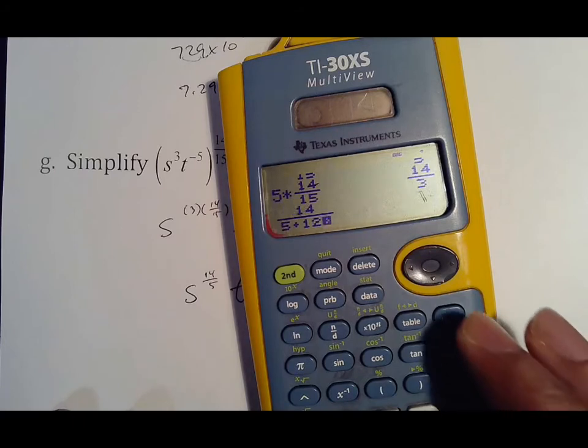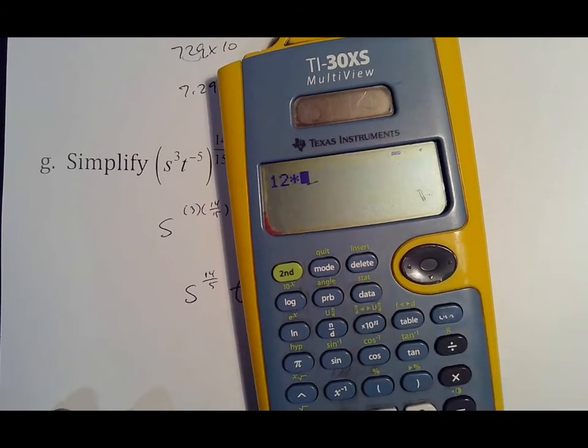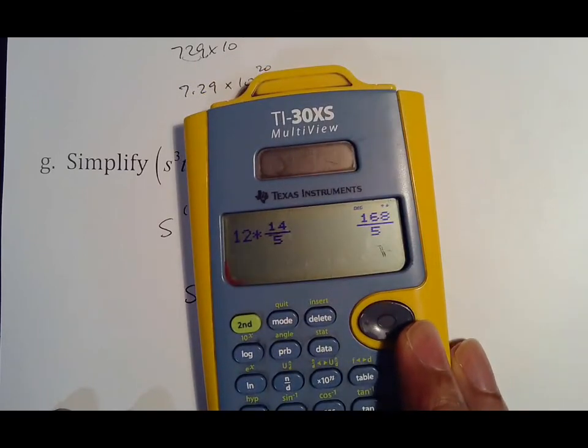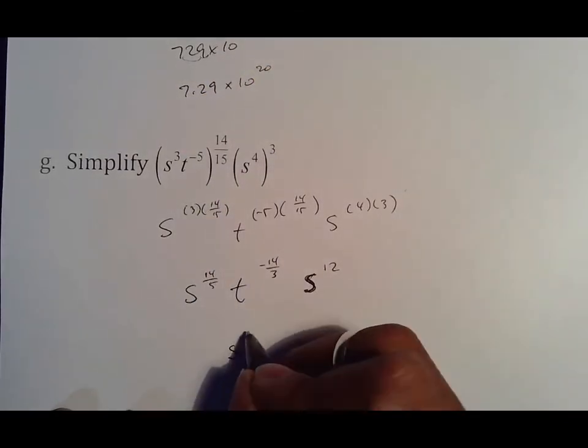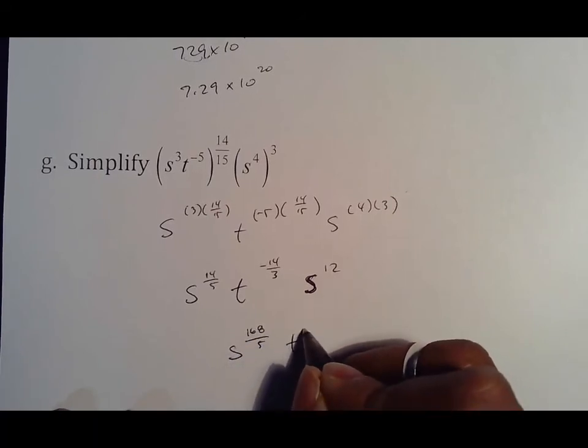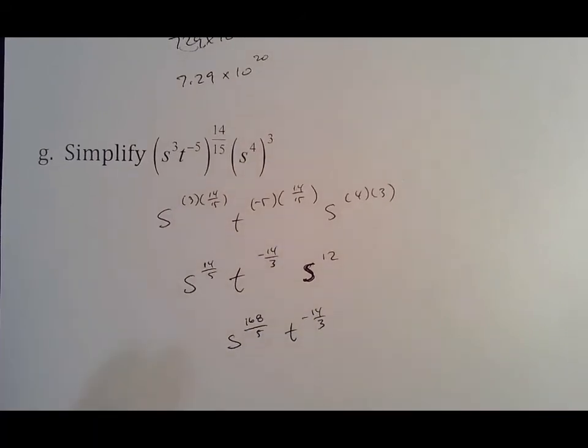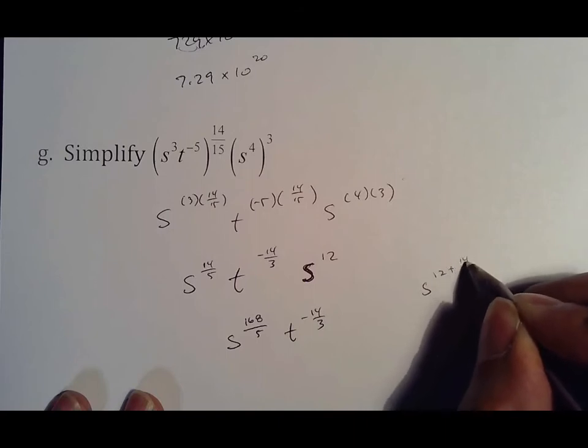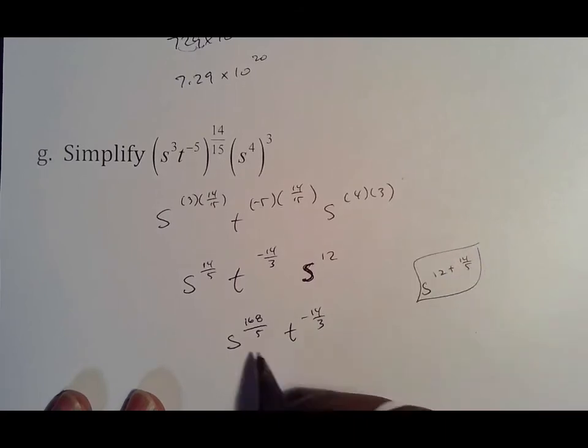So 14 fifths plus 12. Let's do it the other way: 168 over 5. If you're going to write a note, make sure you put you did s to the 12 plus 14 fifths because that's where that came from.